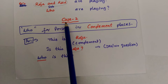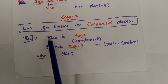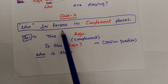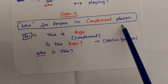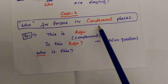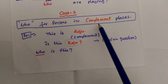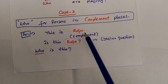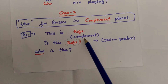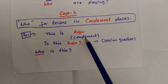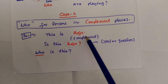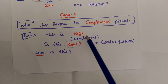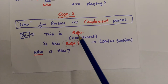Here is case number two. Who can be used for persons in the complement place. Complement place means if the person is found after a B-form, it is called the complement place. Let us see how to form a question with 'who' in this case.